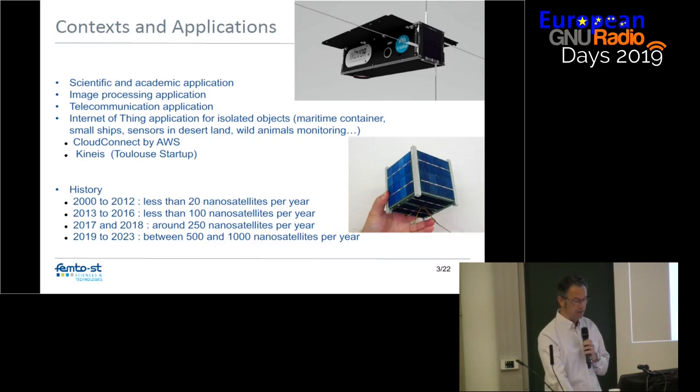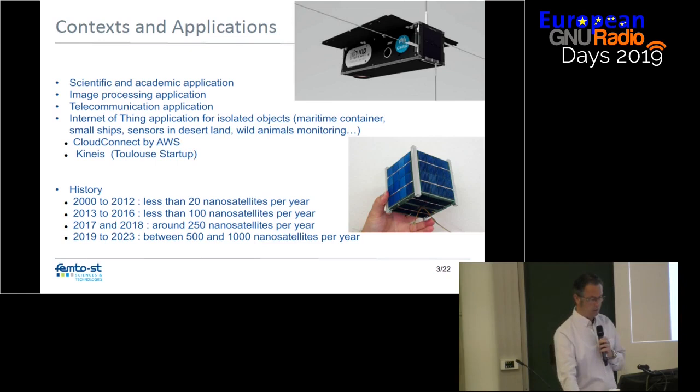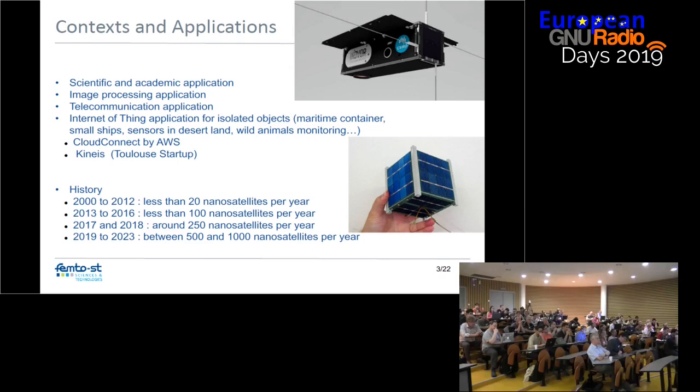Why do we have nanosatellites in space? Because there are scientific and academic applications, image processing applications, and recently more and more applications about Internet of Things for isolated objects on Earth — like containers, small chips, sensors in desert land, wild animal monitoring, etc. Some projects are growing currently.